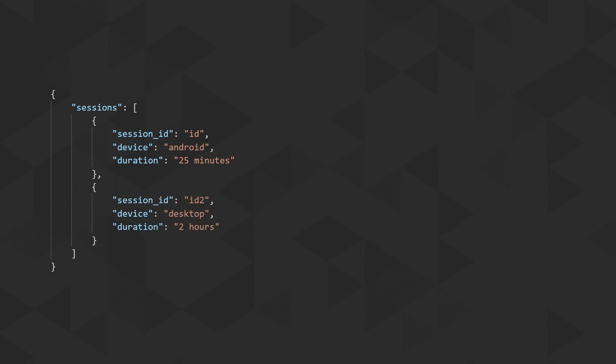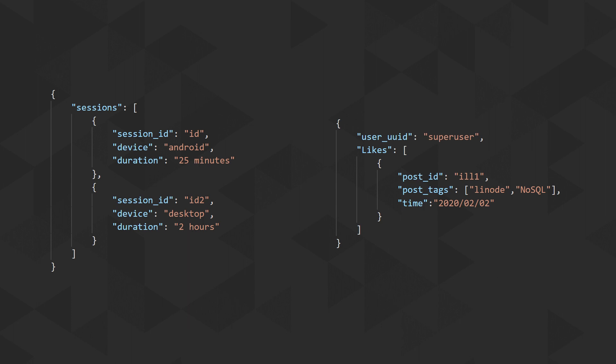We want to store what device they were using, what products they're looking at, how long they're looking at those products, whether they're liking or bookmarking products, or adding them to the cart. We want to store all these different types of activities. As functionality grows, we're storing different types of information about user activity — it's constantly expanding. Our users could be on the platform four or five times a day, so this is a really good case for NoSQL databases — storing vast amounts of data that doesn't always have a fixed structure.